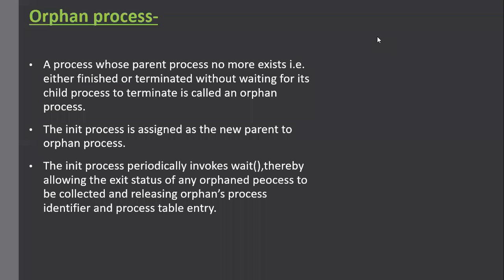An orphan process is a process whose parent no longer exists — that is, the parent has either finished or terminated without waiting for the child process to terminate. Since the parent process removes the entry from the process table, if the parent has terminated, there is no one to remove the entry for this orphan process. So the init process is assigned as the new parent to the orphan process. The init process is basically the root of the process hierarchy. It keeps checking using the wait system call whether the child process has terminated, and once it does, it collects the exit status and releases the orphan process identifier from the process table.